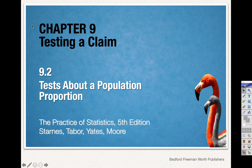Hello and welcome back to chapter 9. In the beginning of chapter 9, we look at the outline of a hypothesis test where we're testing a claim. Today we're going to look at a very specific hypothesis test, which is your next inference test, and this inference test name is a 1-proportion Z test.